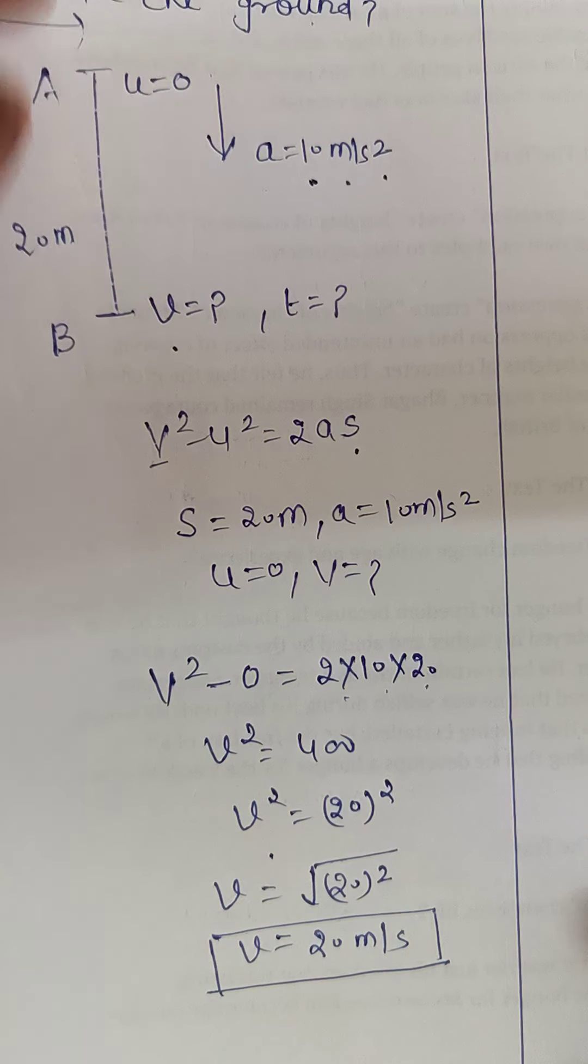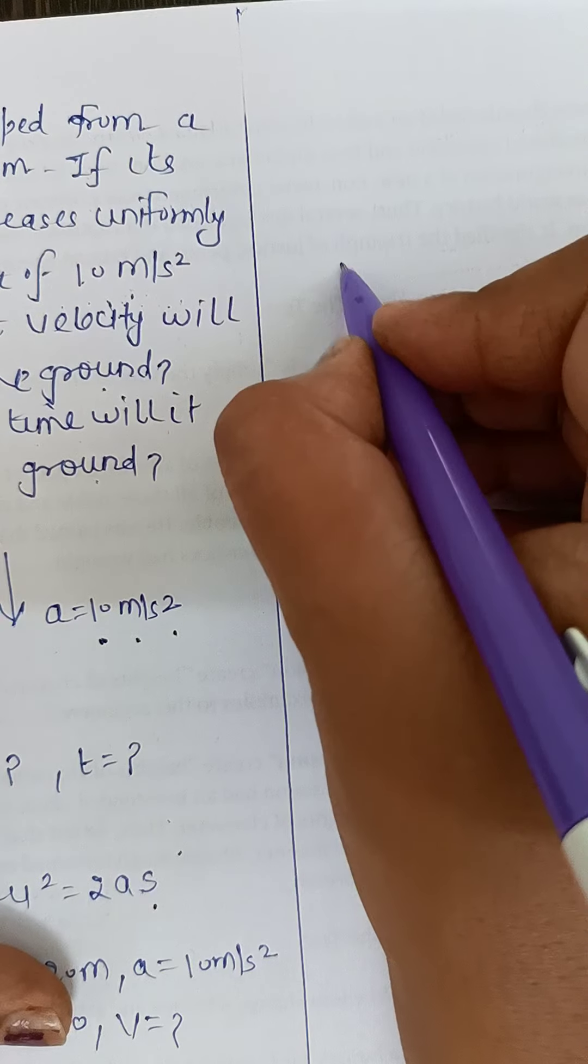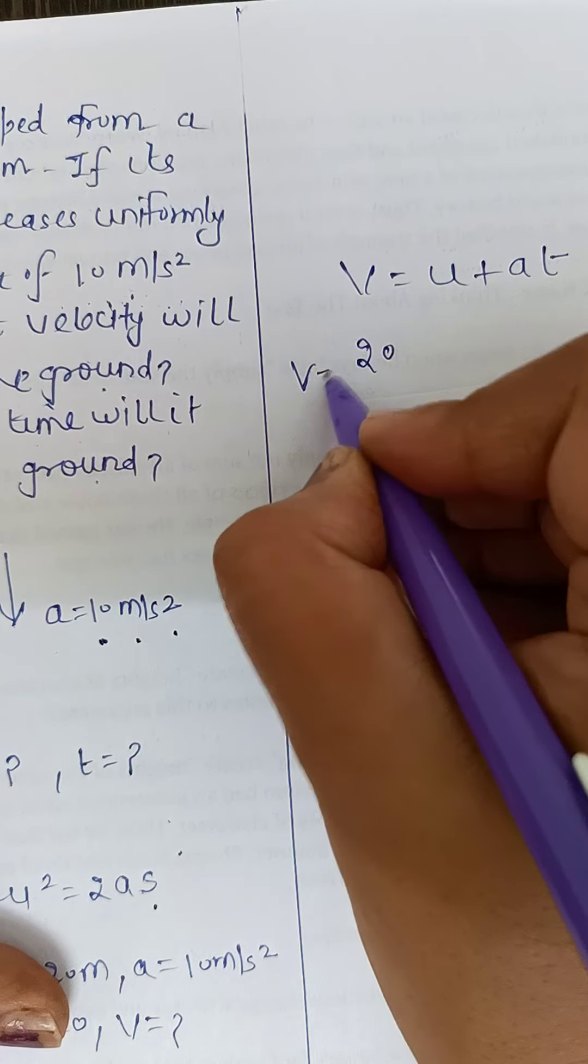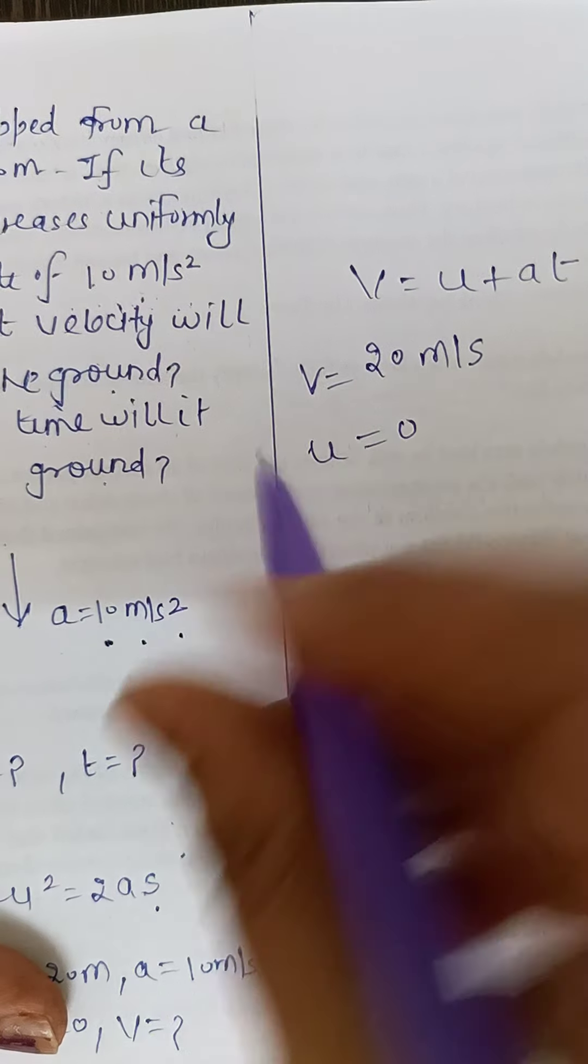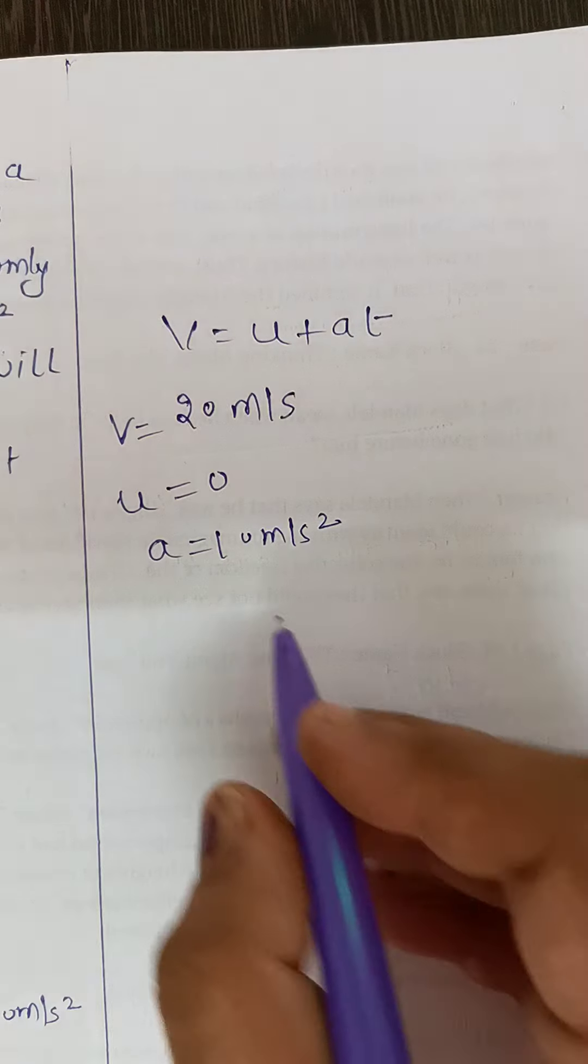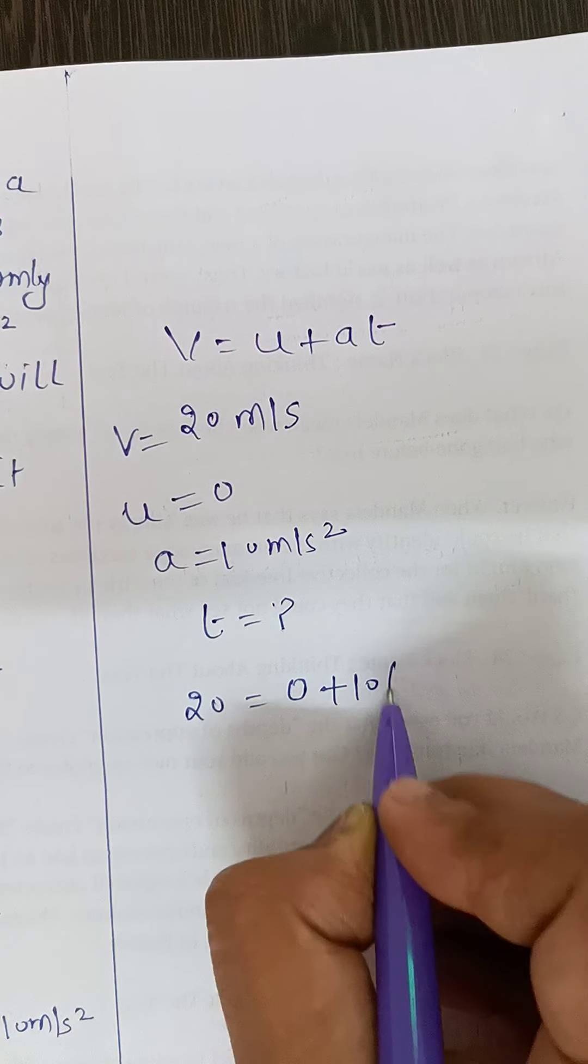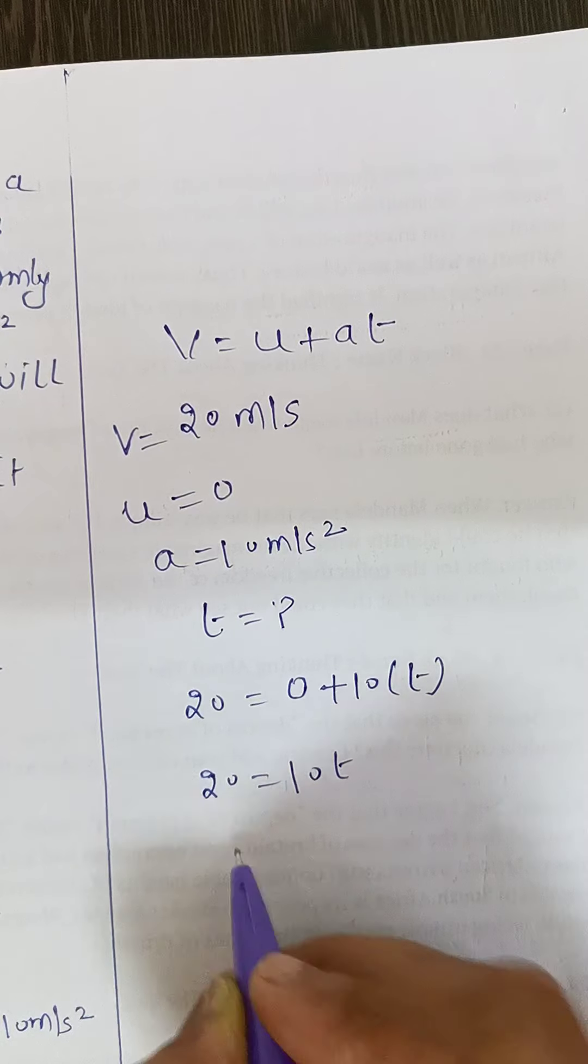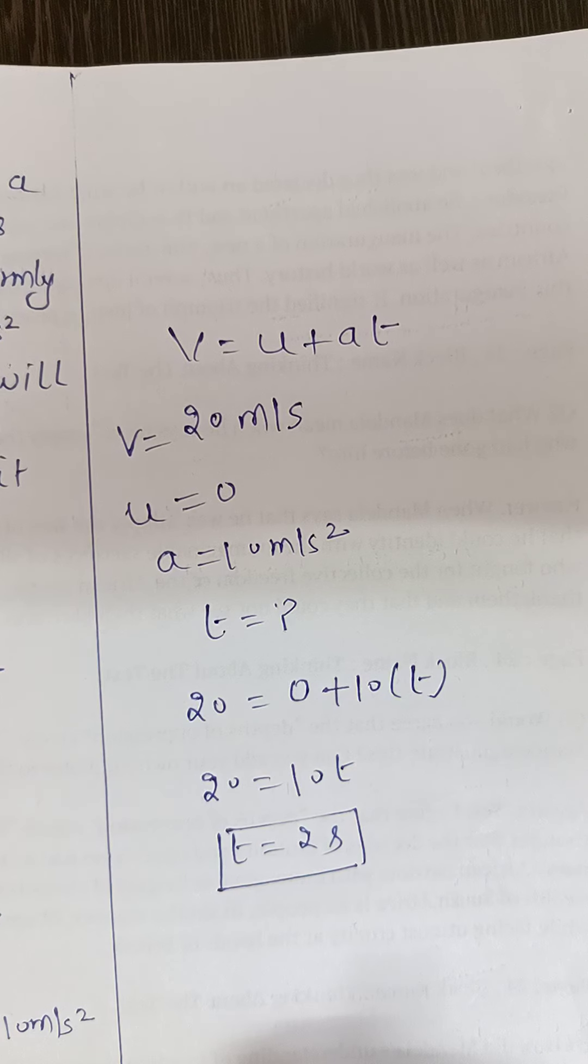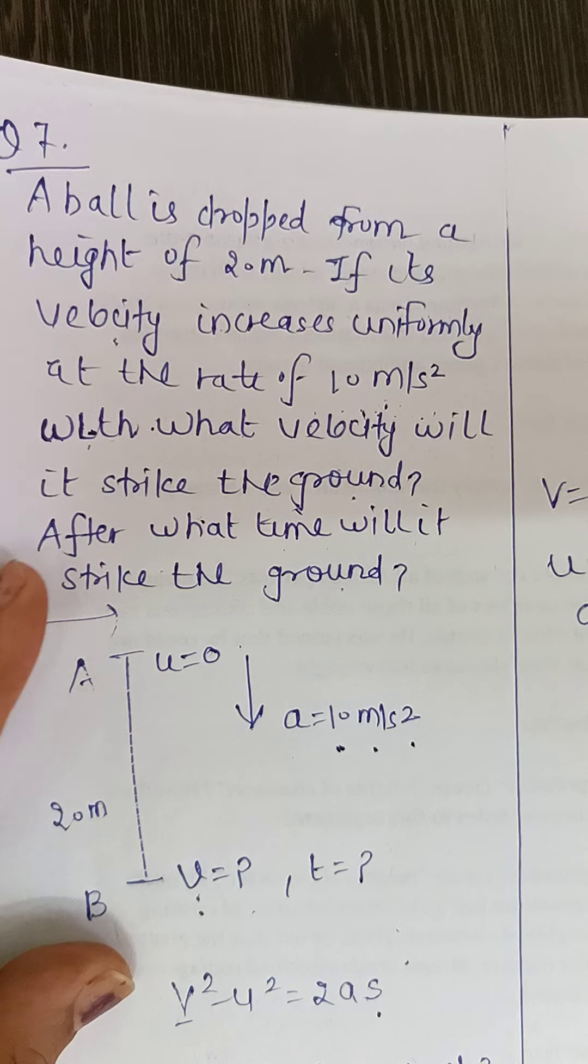Now what we have to find is, how much time does it take to hit? So here, directly we can use this equation, quite easy calculations: v = u + at. Final speed we have calculated is 20. v value is 20 meter per second. u, because it is dropped, so rest at start, zero. Acceleration is given, 10 meter per second square. And time we have to find out. So put the value: 20 = 0 + 10 × t. So 20 = 10 × t, t time is 2 seconds. So it means after time of 2 seconds, the ball will hit the ground, and on hitting it, it will have a speed of 20 meter per second.